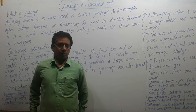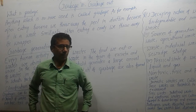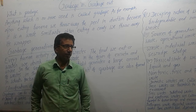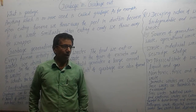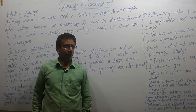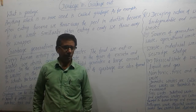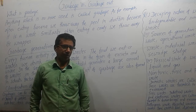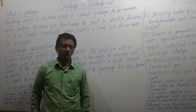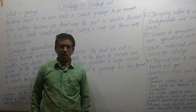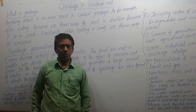Hello students. This is part 1 of Classic Science chapter 16, that is Garbage In Garbage Out. In this part, we are going to study three very important topics of this chapter. These topics are: what is garbage, garbage generation, and classification of garbage. So let us see what are the important points related to these three important topics.